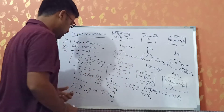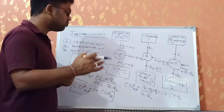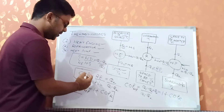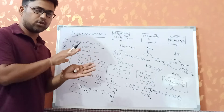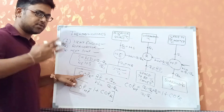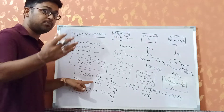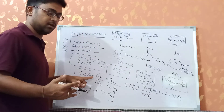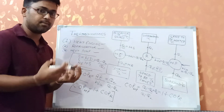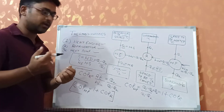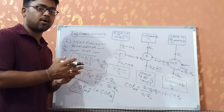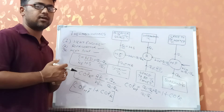So the relation is: COP of heat pump equals 1 plus COP of refrigerator. The coefficient of performance is a very important term. For refrigerators with the same refrigeration capacity, the one with higher COP will have lower work input, meaning lower running cost. So higher COP means lower work input and lower running cost, while lower COP means higher work input and higher running cost. Running cost basically depends on the amount of work input required.